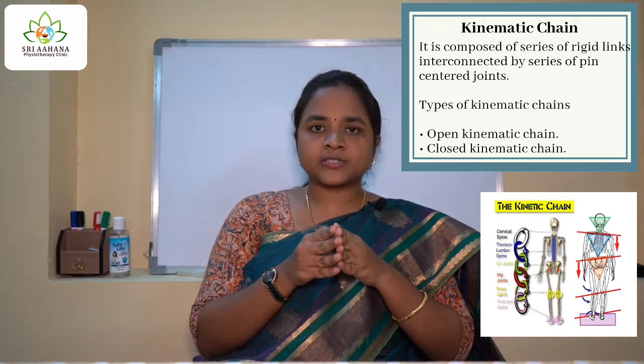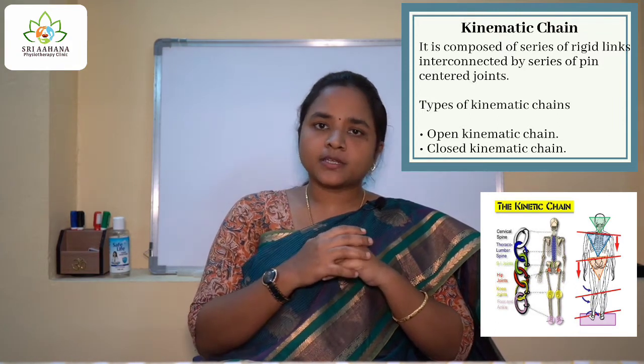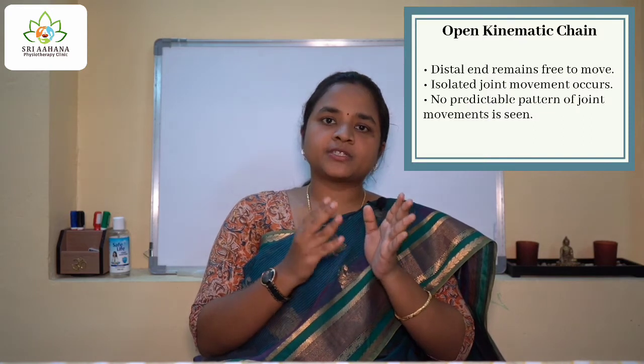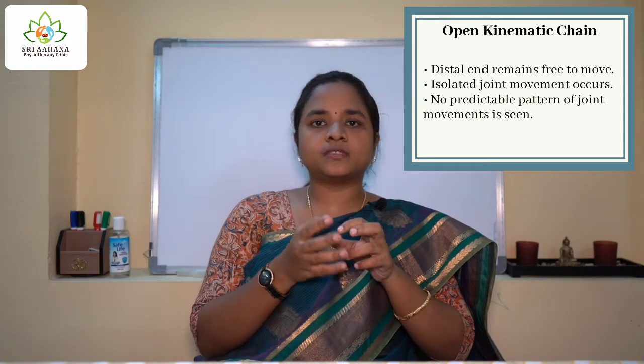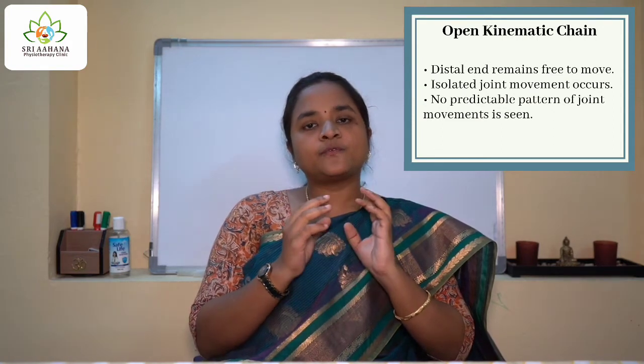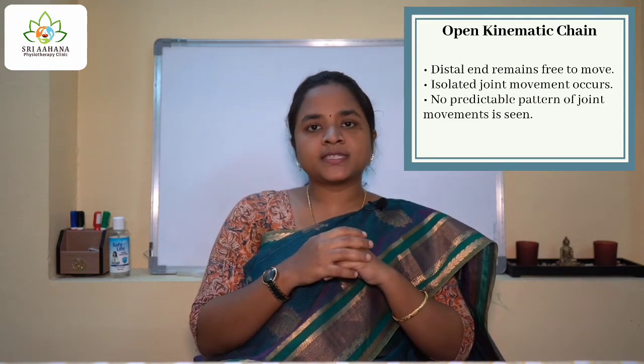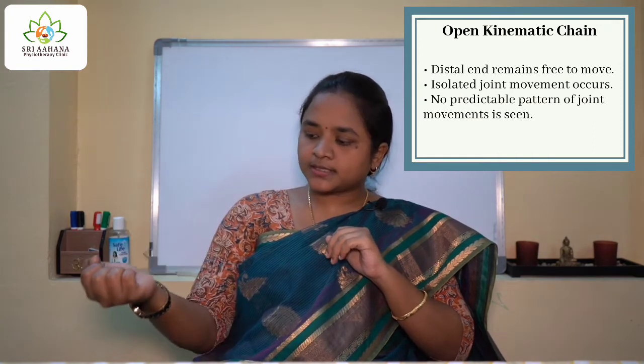The first type is the open kinematic chain. In an open kinematic chain, the distal end of the limb to be moved remains free to move in space. For example, during elbow flexion, the distal end remains free to move — this is an open kinematic chain activity. Other examples include reaching for an object or combing your hair — all open kinematic chain activities.